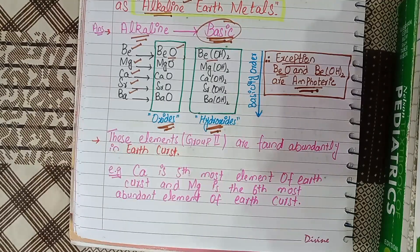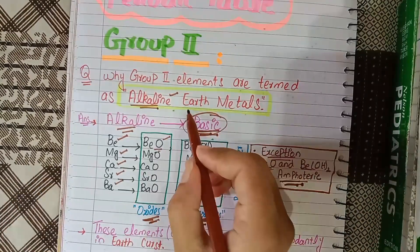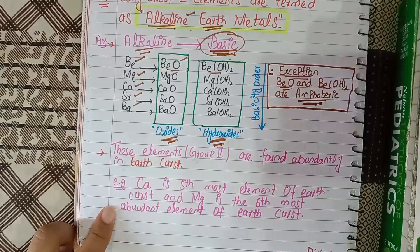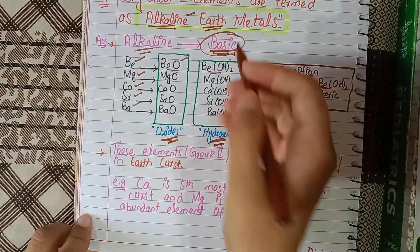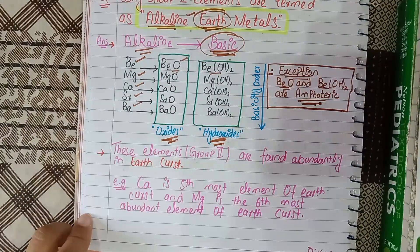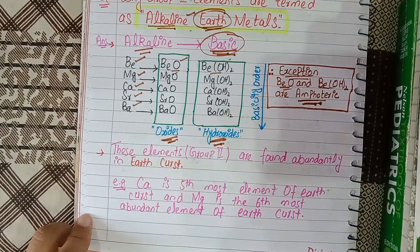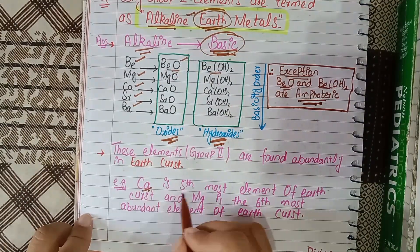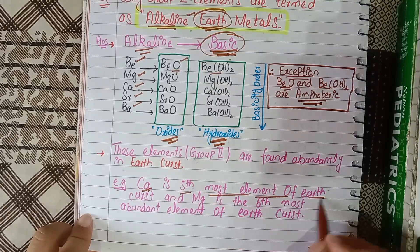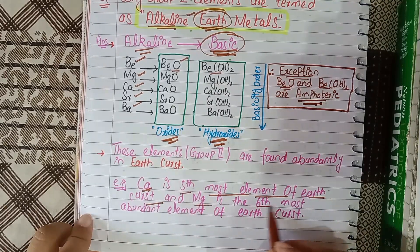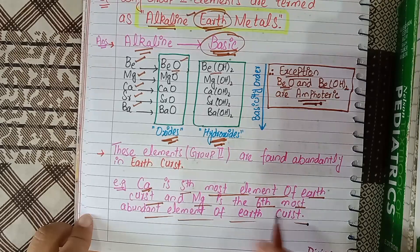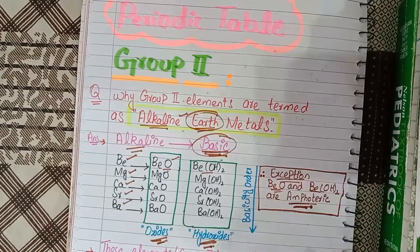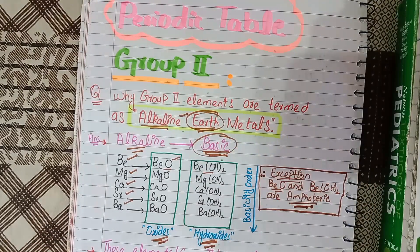The next point is why we use the term earth. Group 2 elements are found abundantly in the earth's crust, so they are designated by the term earth. For example, calcium is the 5th most abundant element of the crust and magnesium is the 6th most abundant element of the crust.